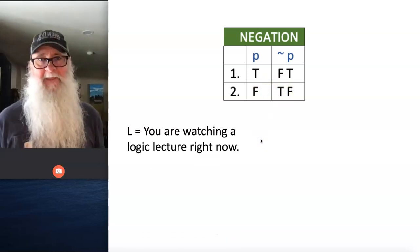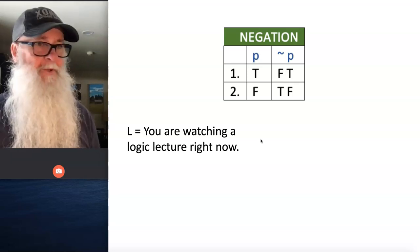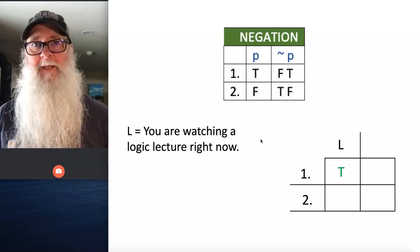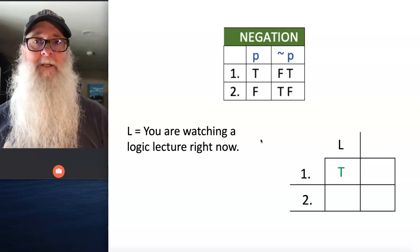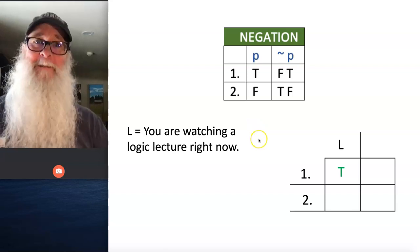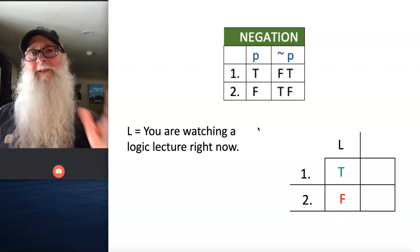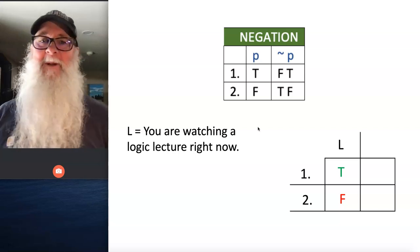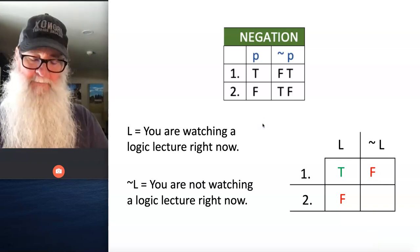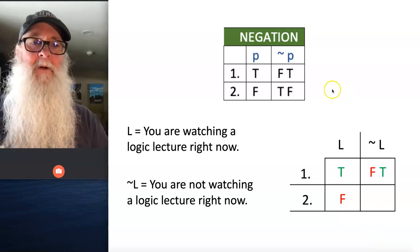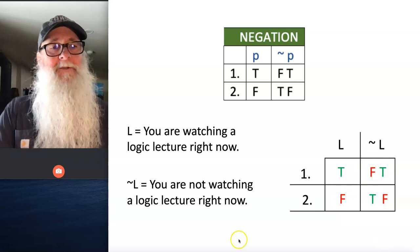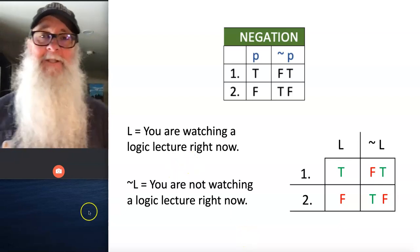Think about it this way — right now, this statement: you're watching a logic lecture right now, true or false? You're thinking to yourself, that's true right now at this moment. So this is true. Now maybe later on you get a life and you start to do something other than logic, and in that case, when reality is organized such that you're not watching a logic lecture, we're going to say that this statement is false. This principle is going to hold for tilde L as well — whenever L is true, tilde L is false; whenever L is false, tilde L is true. So this is the relation of negation.